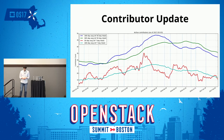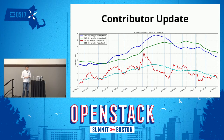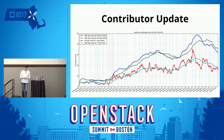Looking at who the community is: in the last OpenStack cycle, Ocata, we had 120 unique contributors to Swift and 45 brand new code contributors in the past year. On this chart, the blue line on top is monthly active contributors and the red line slightly lower is weekly active contributors. These count unique people who contributed code by writing a patch or by doing code reviews — both are equally important.